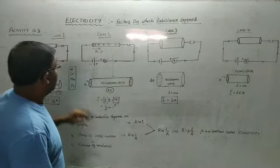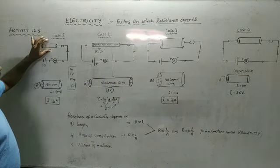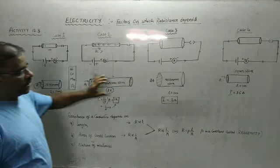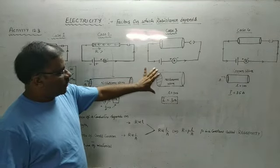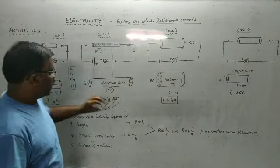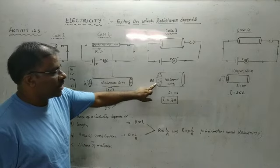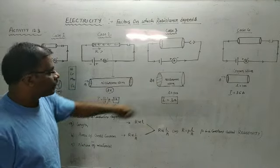In case C, we have the same nichrome wire of 1 meter length, but the thickness of the wire is more. The thicker wire has a larger area of cross-section.